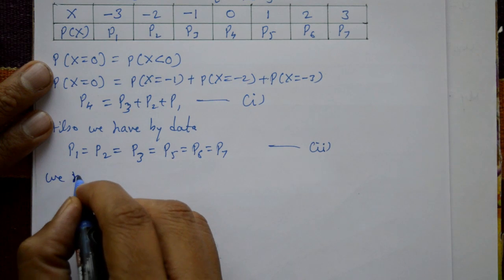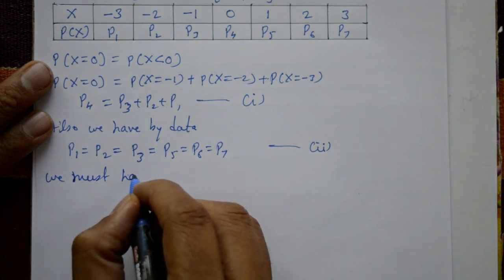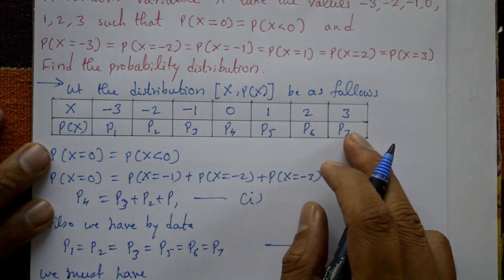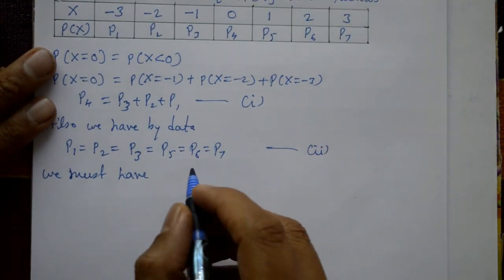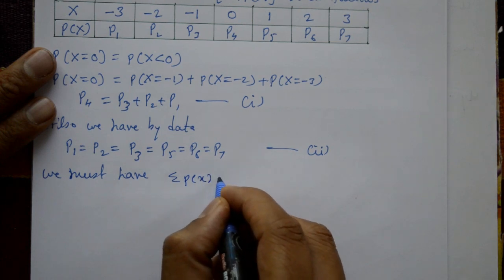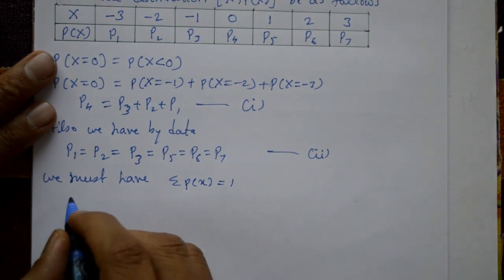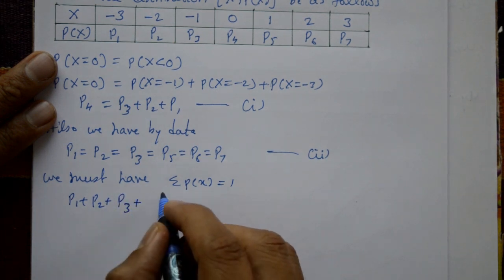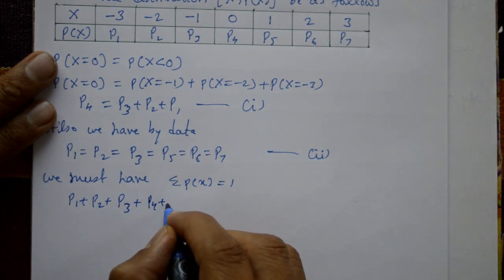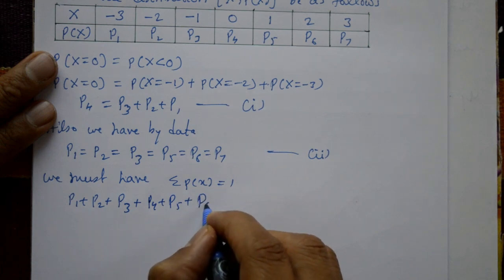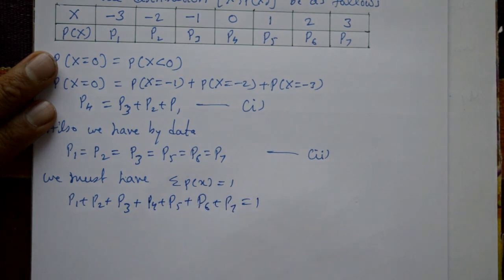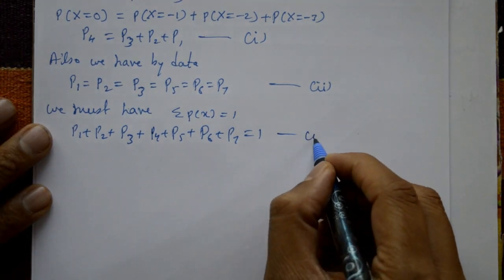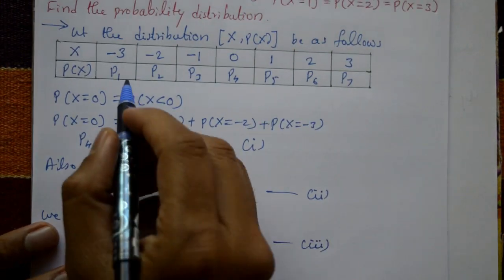We must also have the sum of all probabilities equal to 1. So p1 plus p2 plus p3 plus p4 plus p5 plus p6 plus p7 equals 1. This is equation number 3.